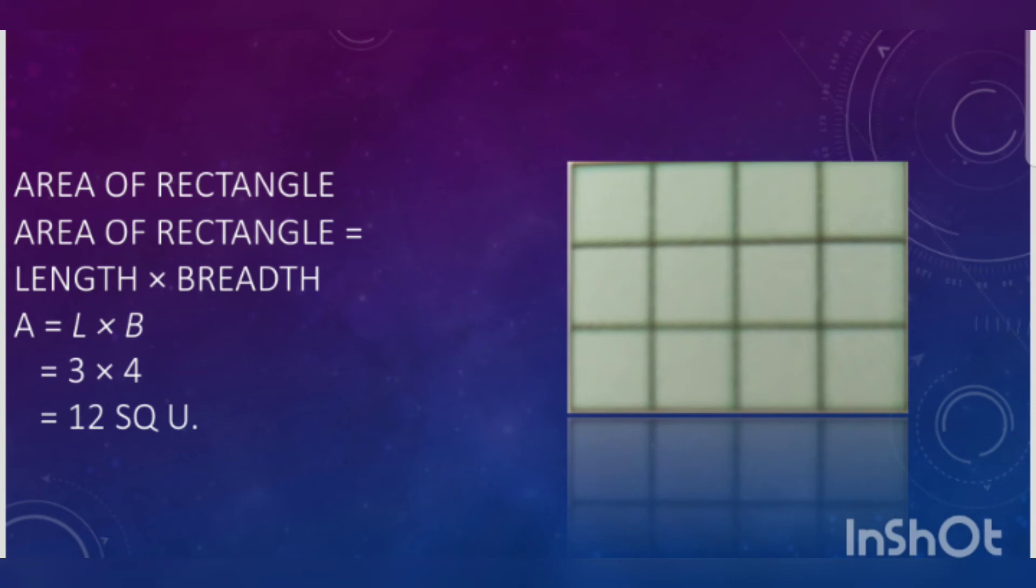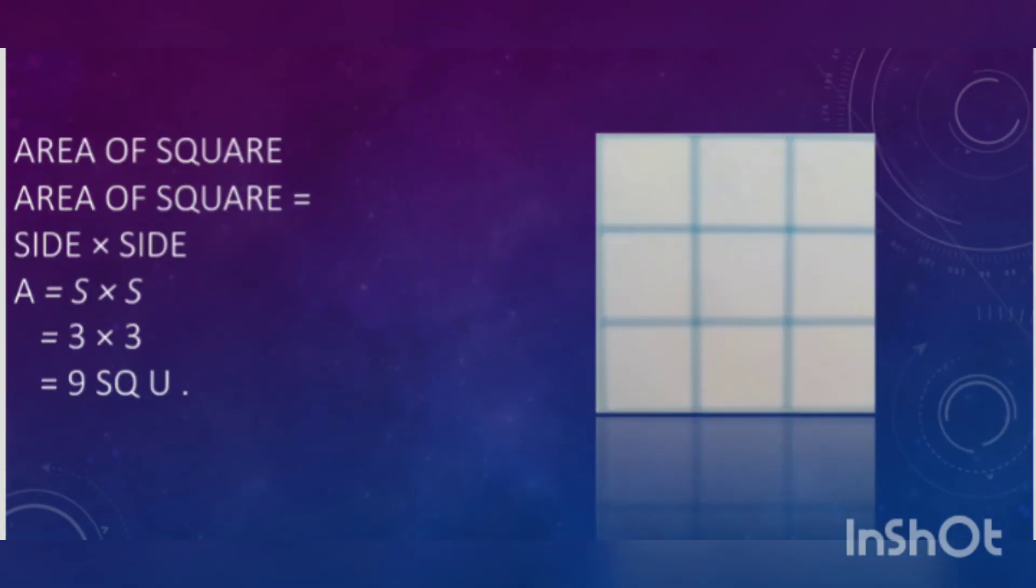Area of square is equal to side times side. You can see here is also 3, here is also 3. Area equals S × S, which means side times side equals 3 × 3. The first side is 3, the other side is also 3 in a square.